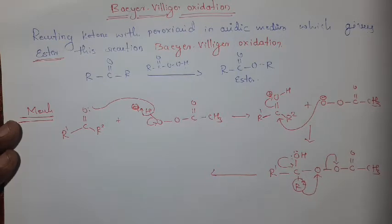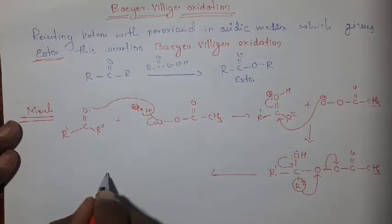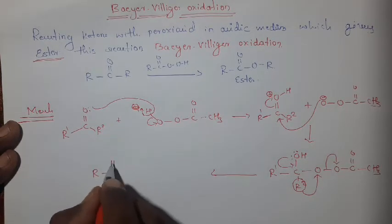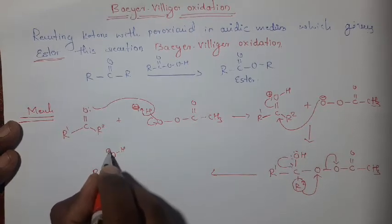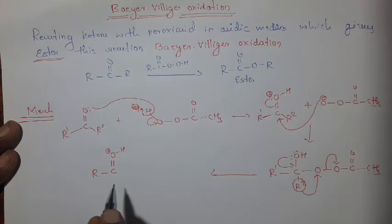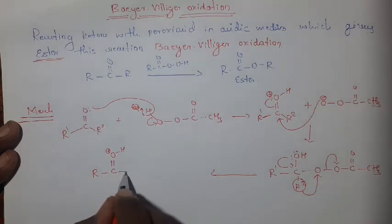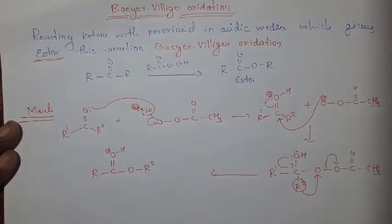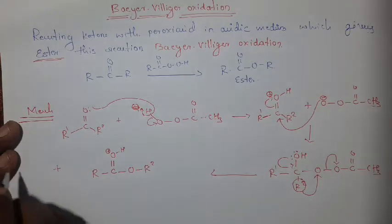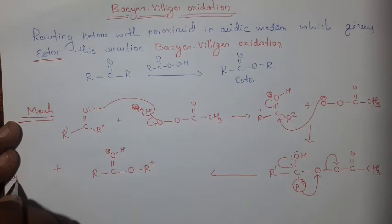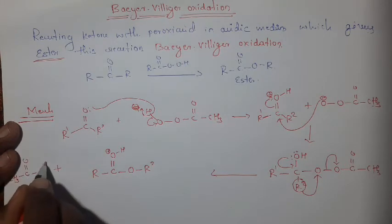If R2 is the more electronegative group, then this group is shifted to the oxygen, and at that time the oxygen–oxygen single bond gets broken. Then it gives R–C=O with H, this oxygen becomes positively charged again, and this becomes O–R2, plus the acyl group C=O–O⁻.